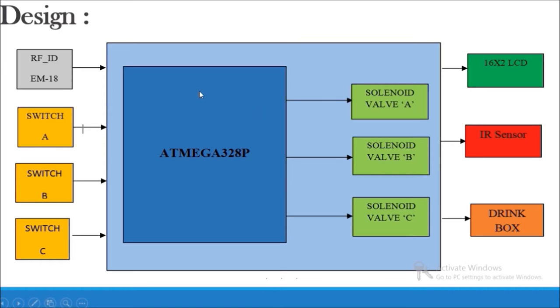Then the user needs to place the cup in the drink box which will be detected by the IR sensor. The user needs to choose his drink A, B, or C, and accordingly the solenoid valve will open and the drink will fill in the drink box.